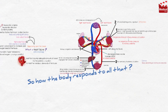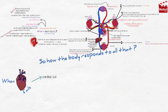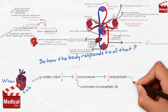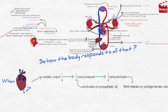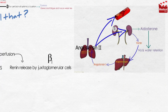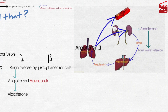When the heart fails, cardiac output decreases, leading to decreased blood pressure and decreased renal perfusion, which activates the sympathetic nervous system. Renin is released by juxtaglomerular cells in renal afferent arterioles due to decreased renal perfusion and sympathetic stimulation of beta-1 receptors. Renin ultimately leads to production of angiotensin-2 in the plasma and release of aldosterone from the adrenal gland. Angiotensin-2 is a powerful vasoconstrictor that increases systemic blood pressure, while aldosterone acts on the kidney tubules to increase salt and water retention, increasing blood pressure and causing edema.